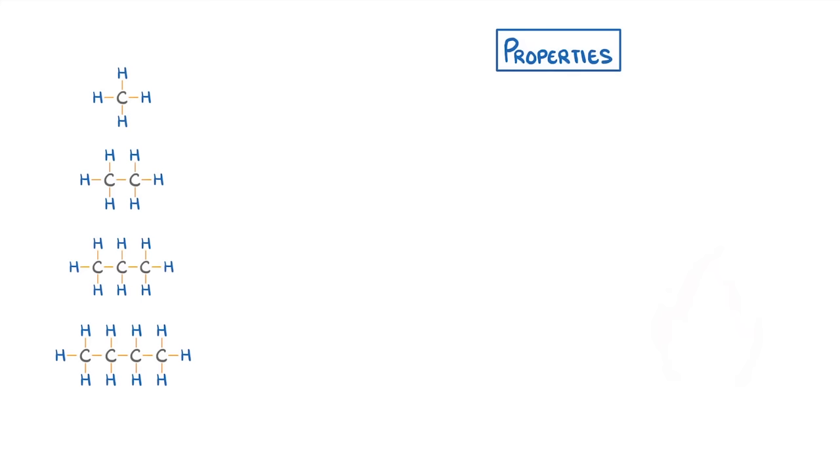Although all alkanes have similar properties, there are trends that you need to know about as the length of the carbon chain increases. The first is that the boiling point increases with chain length.